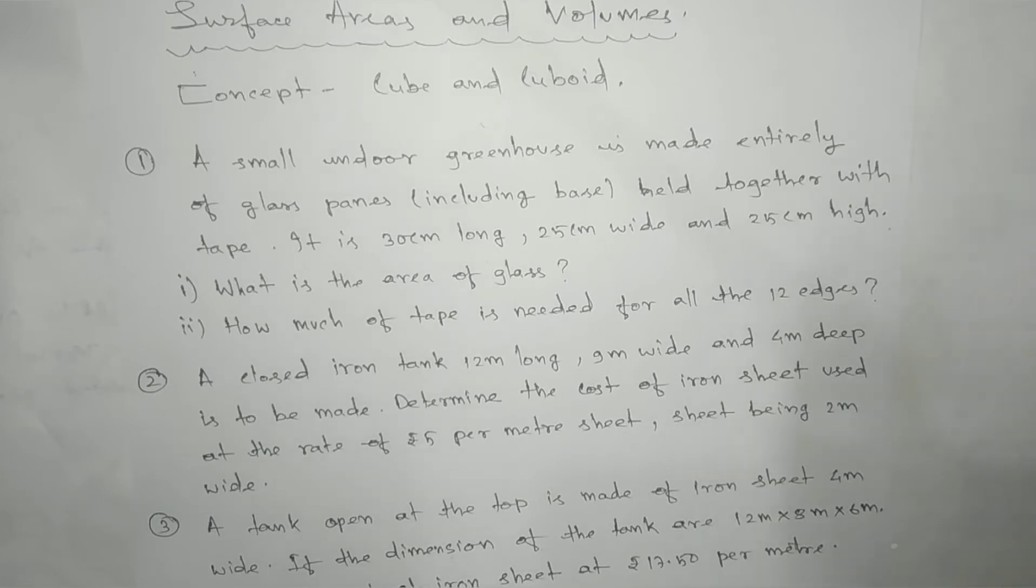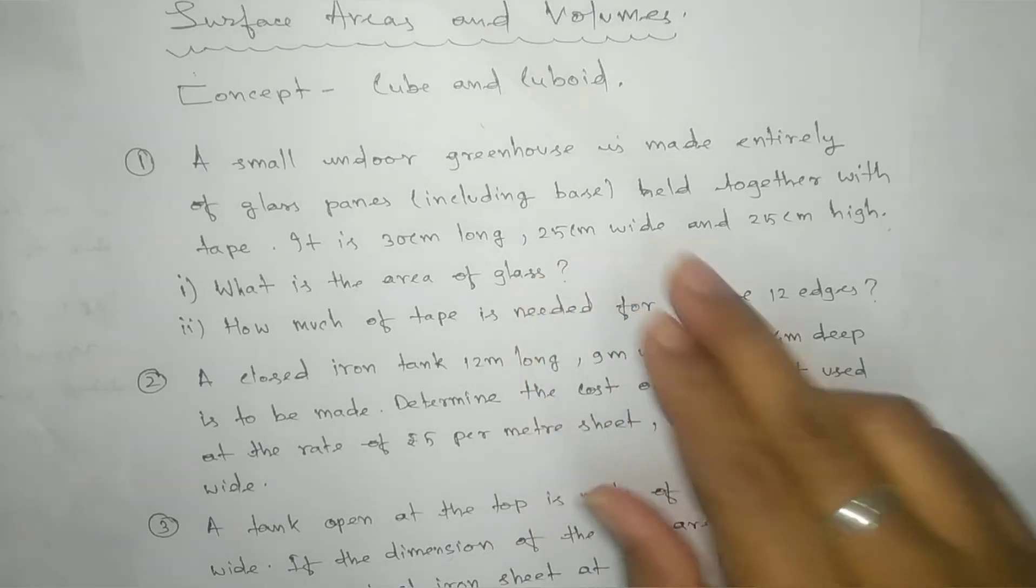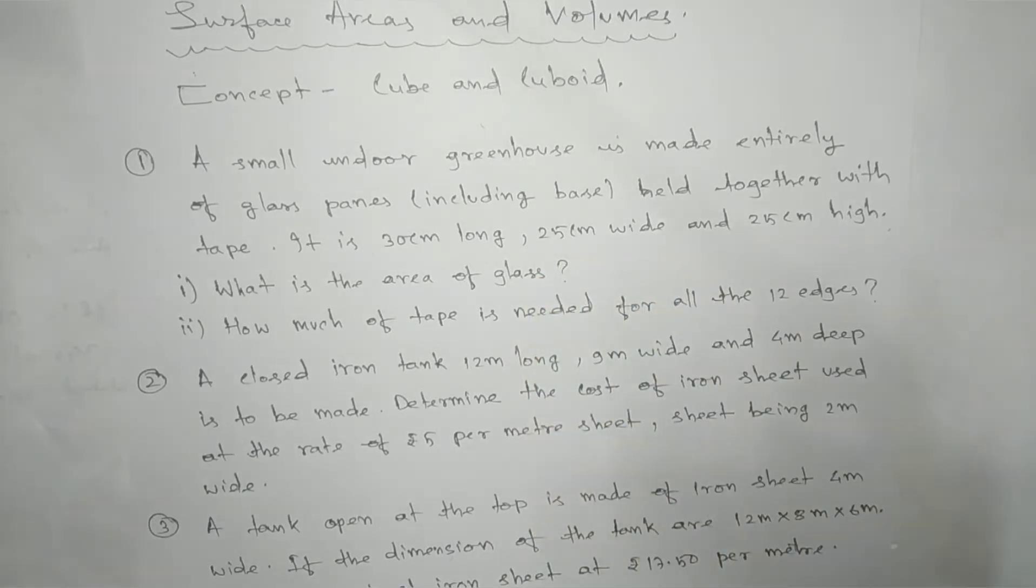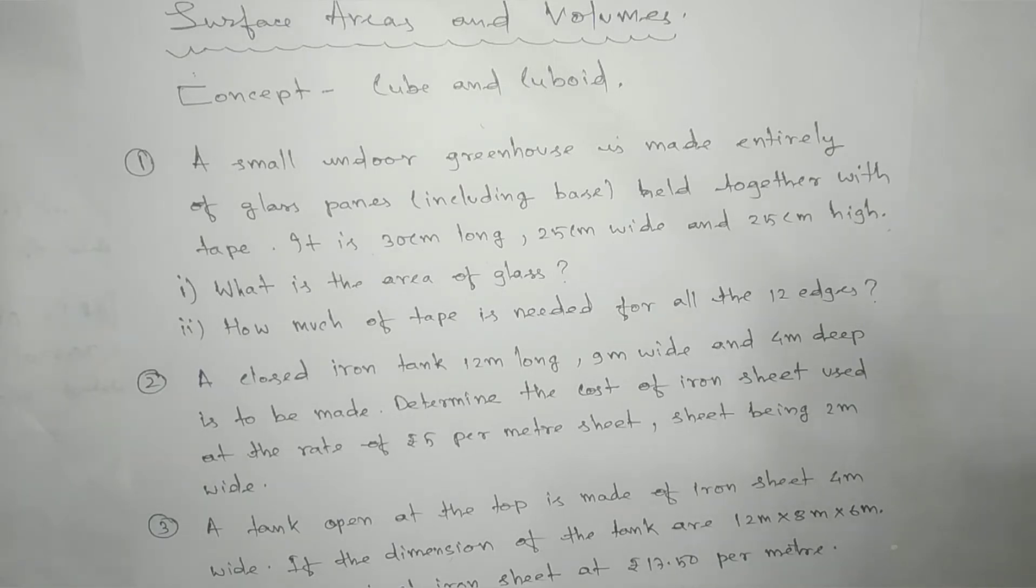We need to find what area of glass - that means including base, we need to find total surface area. The length, breadth and height have been given. Next: how much tape is needed for all the 12 edges? To find this, we need to find the perimeter.